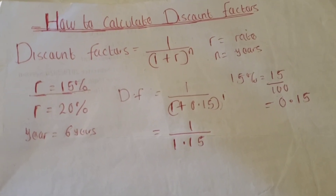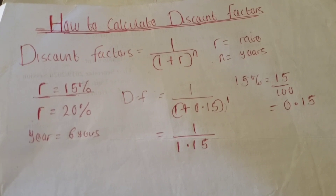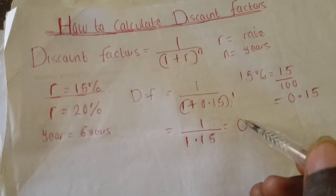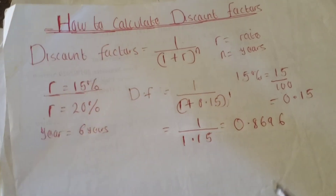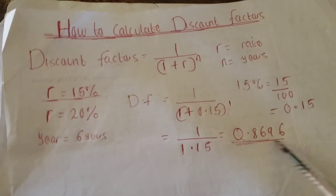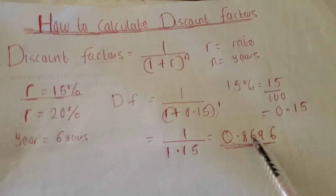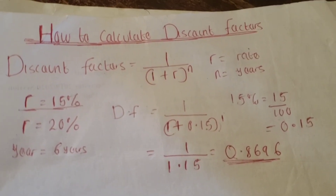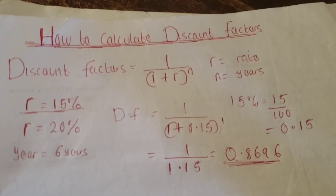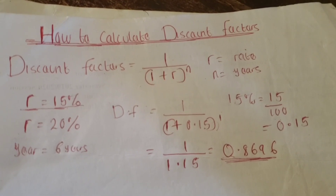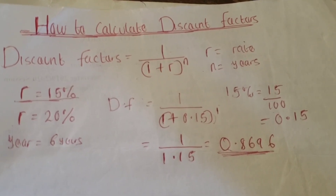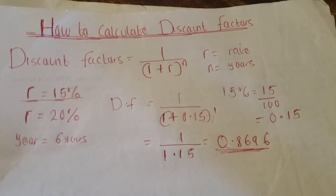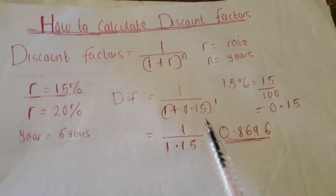On your calculator: 1 divided by 1.15 gives 0.8696. So this is the discount factor for the first year at 15%. If you use the table you will still get this same answer. I'm showing you this because you might not be permitted to take the discount factor table into the exam, so you need to know how to handle both situations.